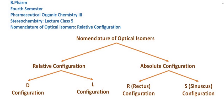Hello friends, welcome to Peeperide Academy. In this lecture on stereochemistry, we are going to discuss optical isomers and nomenclature systems. There are different nomenclature systems: the first is relative configuration and the second is absolute configuration. We will also discuss geometric isomers and nomenclature systems.